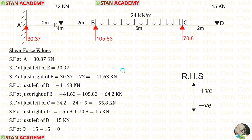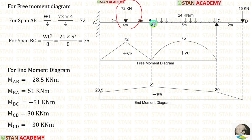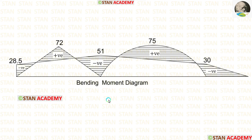Now we draw the shear force diagram. Moving from left to right, upward forces are positive and downward forces are negative. Using the calculated shear force values, we draw the shear force diagram. Then, using the loads, we draw the free moment diagram, and using the end moments, we draw the end moment diagram. Combining the end moment diagram and free moment diagram gives the final bending moment diagram.